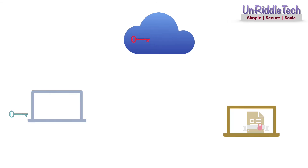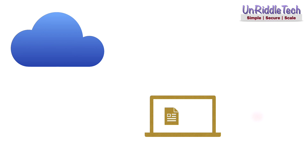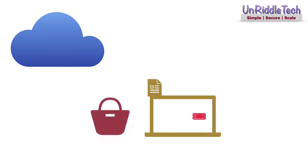The digital signature can be decrypted only by using your public key, so the receiver can get your public key and decrypt the digital signature to get the hash value. The receiver can also generate the hash value by providing the file as input to the hashing algorithm.